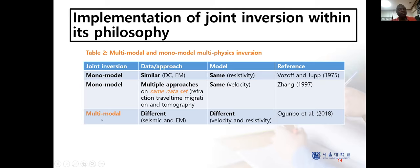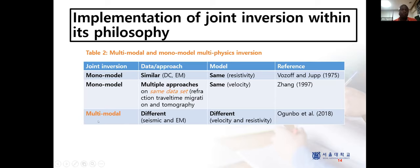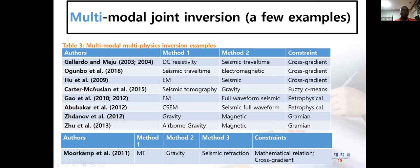Multimodal is when you expect different models at the end of the analysis, using different approaches. For example, you can use seismic and EM — seismic gives you velocity while EM gives you resistivity. That's multimodal. A lot of people are already doing that. I give a list of multimodal joint inversion examples.